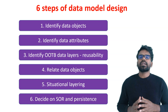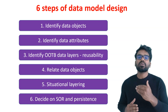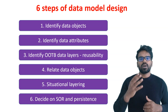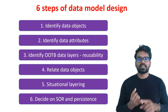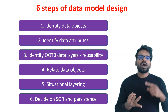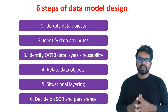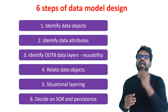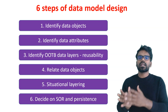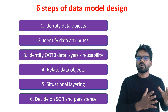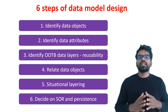The next step is, once you identify the data objects, you can define the attributes for your data object. For example, for the customer details, you can have customer ID, customer type, and all other details related to the customer. Similarly for policy and for approver, and for all other data objects, you can define the attributes.